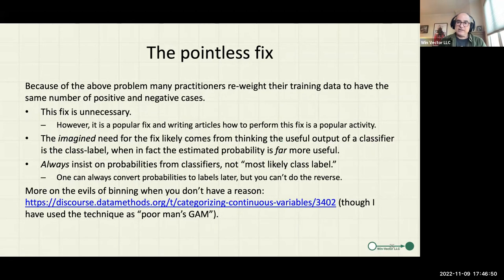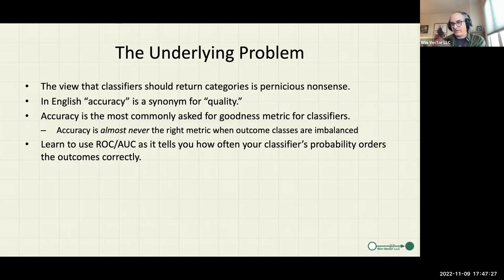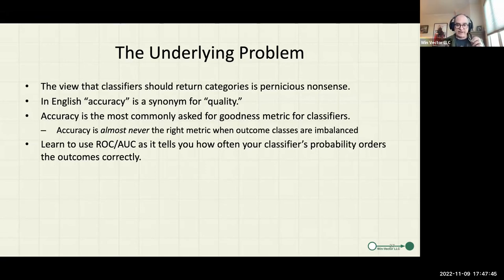For very imbalanced classes like a 1% incidence, the pseudo-prevalence of the classifier immediately goes to zero — for all your data science work, if you accidentally call class label instead of probability, you build a classifier that says nobody has the condition. It's a very accurate classifier; it just kills the business. The way practitioners in Python do it — because it's easier to code than think — is they reweight the data to be 50-50. That gives them a classifier that sometimes says yes, sometimes says no. Please don't do that. The underlying problem is that in American English, 'accuracy' is a synonym for 'quality' — it's the only metric taught most places, but it's the wrong one. My advice: learn ROC plots and AUC as your metric, don't use accuracy, and don't use F1.